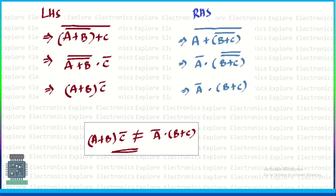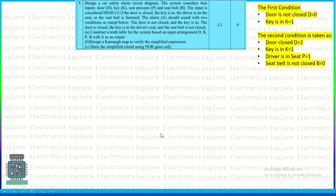To prove this, take LHS: ((A+B)̄ + C)̄, and RHS: (A + (B+C)̄)̄. Simplifying the LHS by applying De Morgan's theorem: the double bar cancels, giving (A+B)·C̄. Simplifying the RHS in the same way gives Ā·(B+C). These two expressions are completely different, so associativity is not valid for the NOR gate — that is how NOR gate non-associativity can be explained.